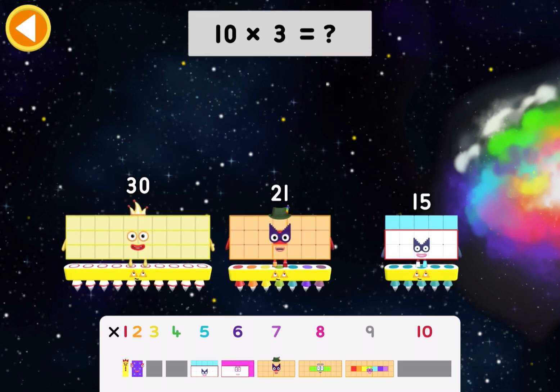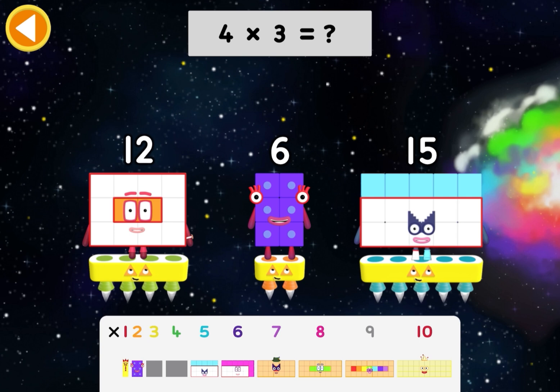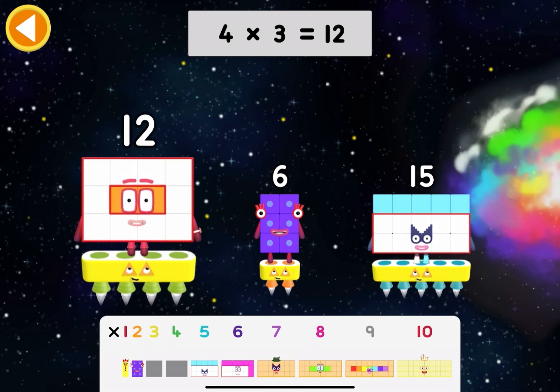Ten times three equals what? Thirty. Four times three equals what? Twelve.